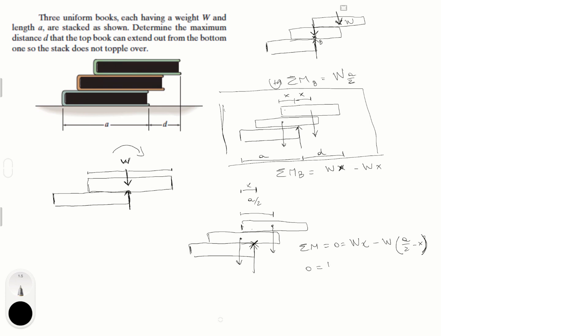So, 0 is equal to weight x minus the weight times A over 2 plus the weight times x. I just distributed this right here. And you know that the weight you can cancel out because it's in all the terms and there's a 0 at the other side. So, you basically have that 0 is equal to 2x minus A over 2. So, if you solve for x you're gonna get that x is equal to A over 4.